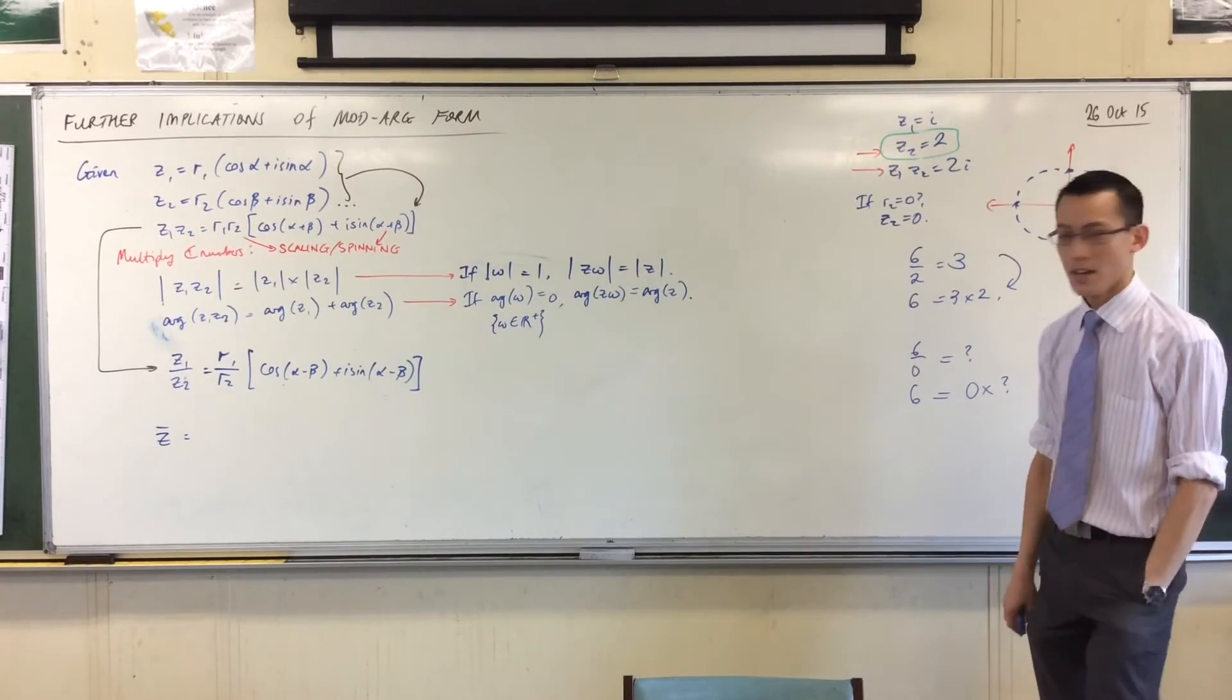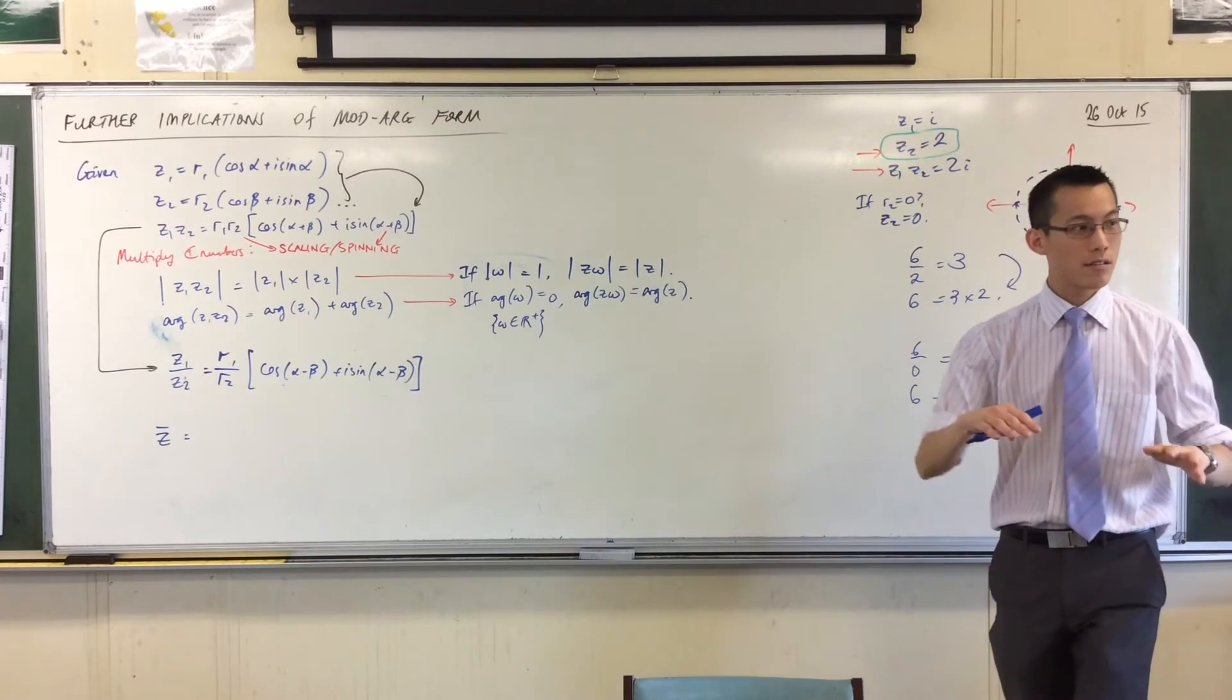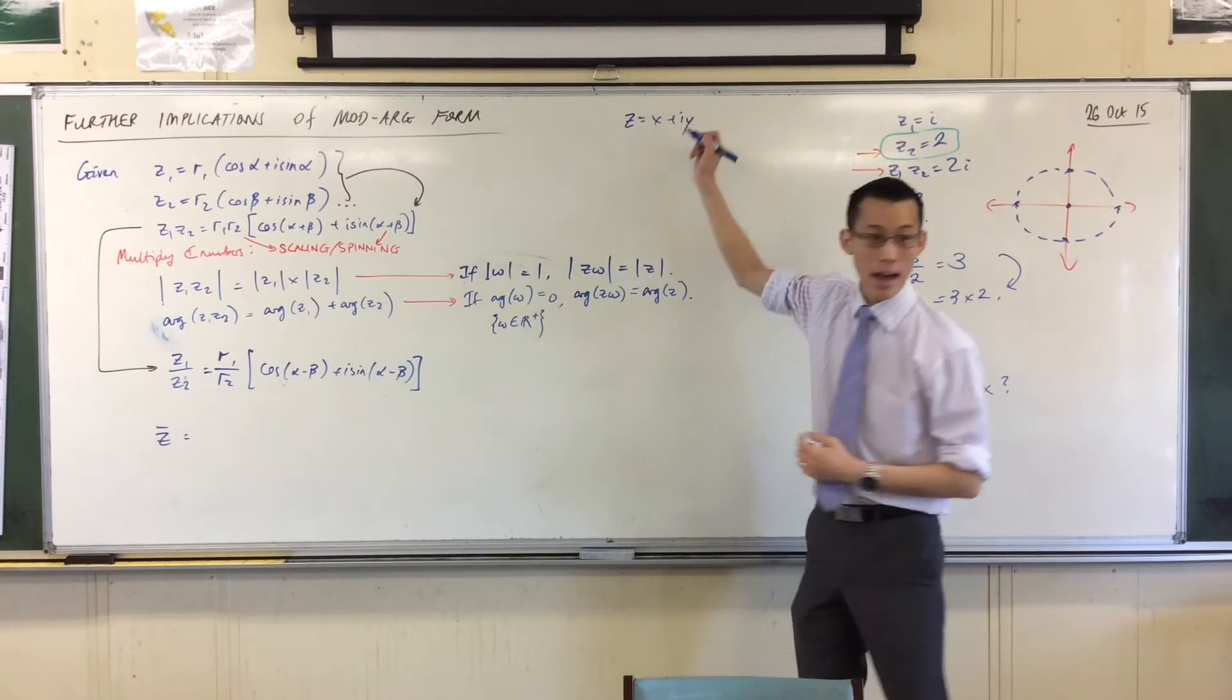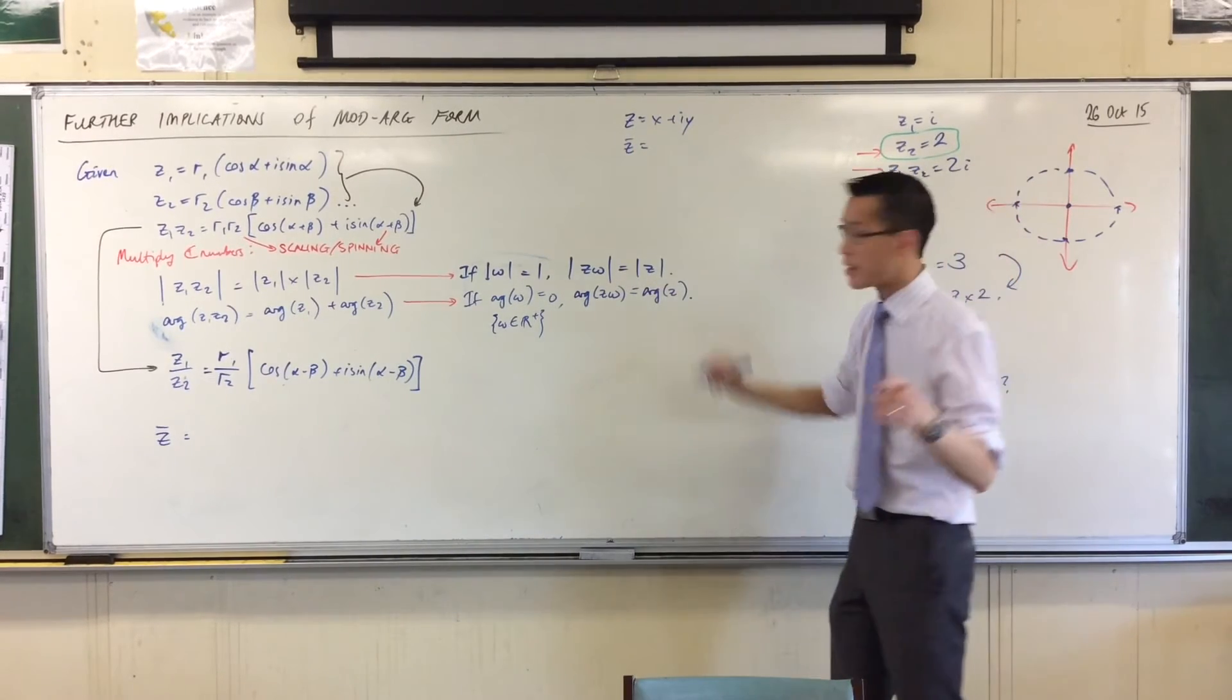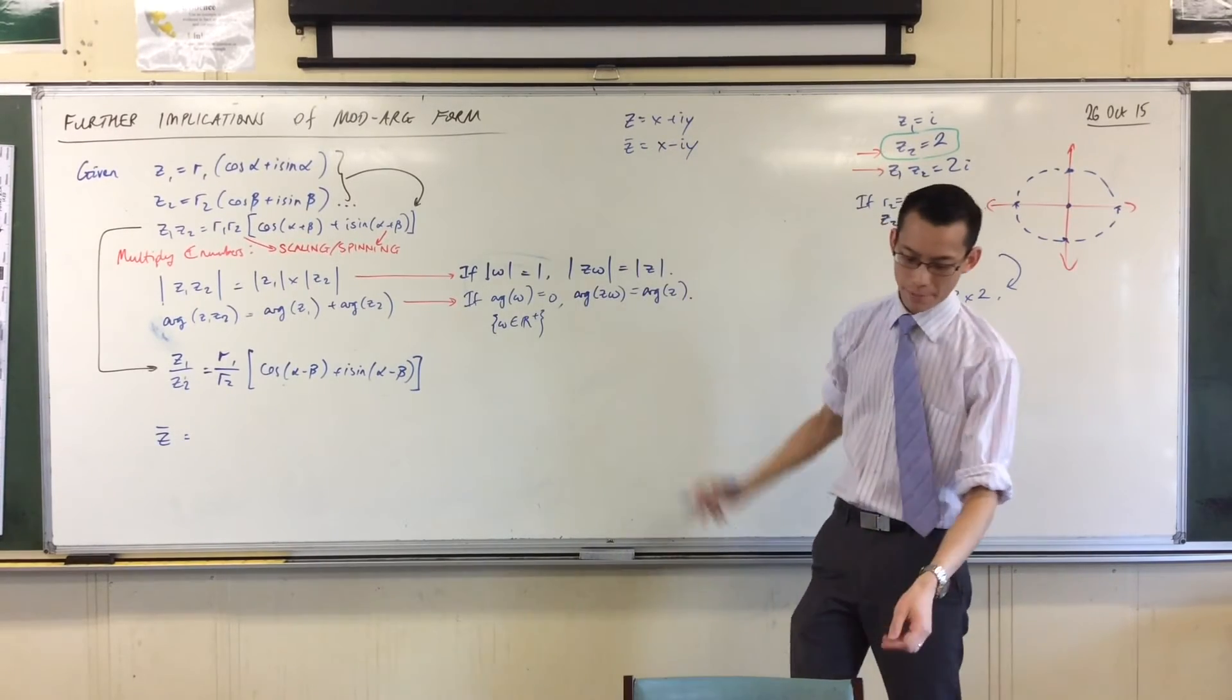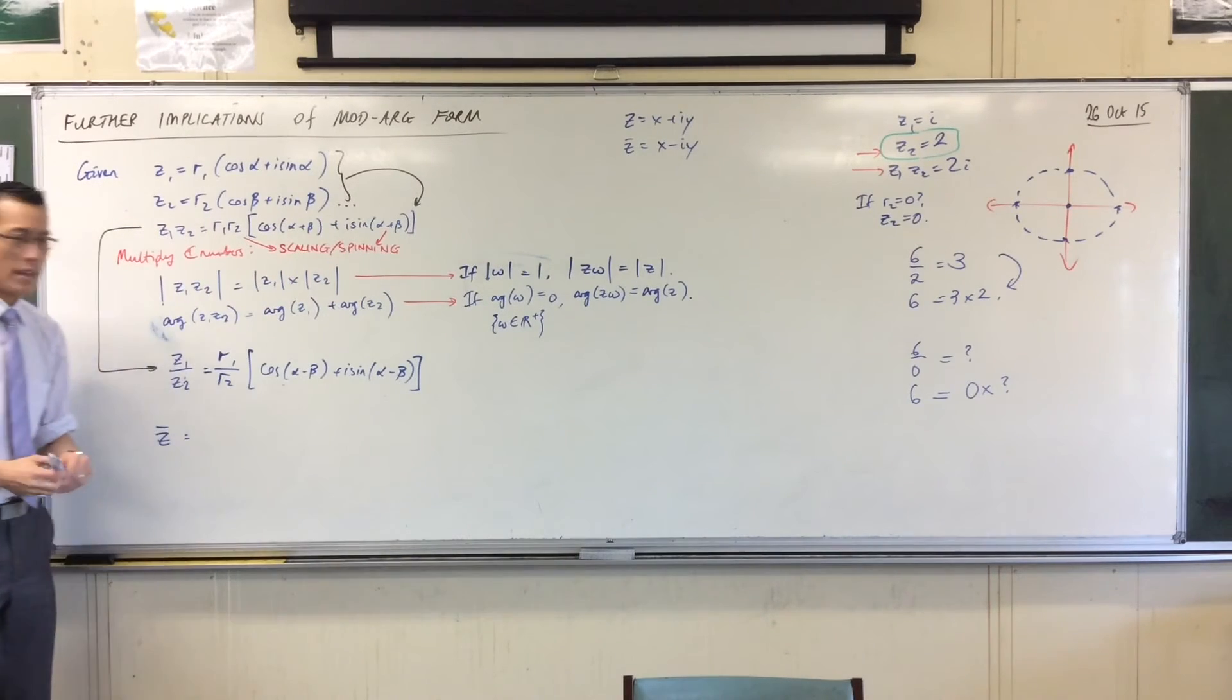And I want you to tell me what you can say about this guy. Think carefully. So, this is a conjugate, right? This is a conjugate. In Cartesian form, we know that if z equals x plus iy, then how do we define the conjugate? Z bar is x minus iy. Yeah, that's right. This plus will turn into a minus, right? x minus iy. Now, what is that going to mean in Mod-Arg form?